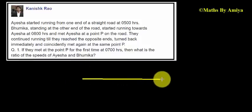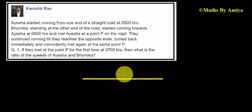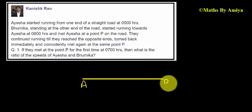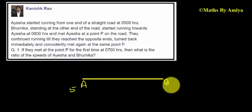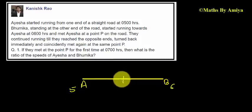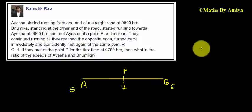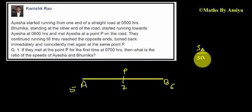Say this is our path in which ISI and Bhoomika are running. From this end ISI starts, from this end Bhoomika starts. They start at 5 and 6 o'clock respectively. They meet at point P, say point P, at 7 o'clock. Now we need to find the speed of ISI to the speed of Bhoomika.